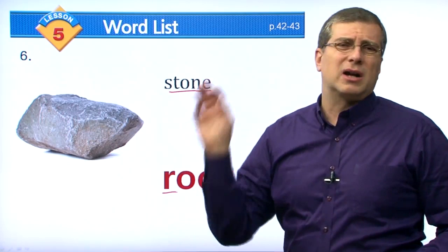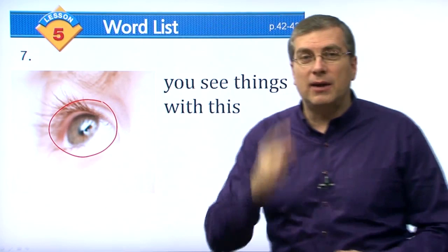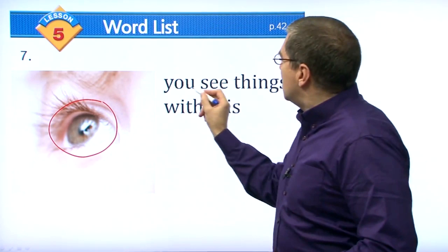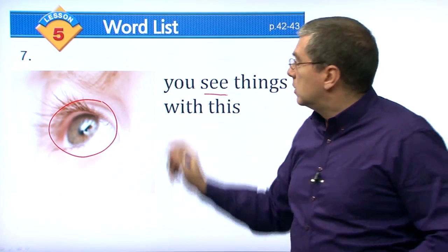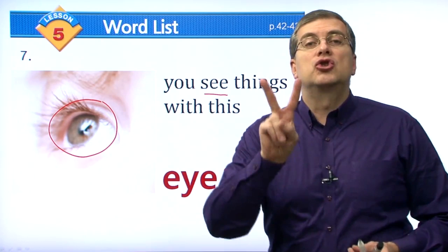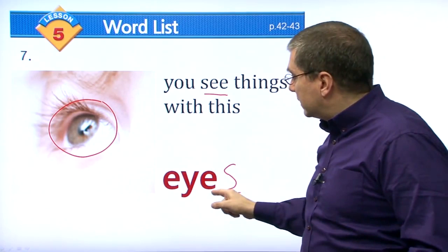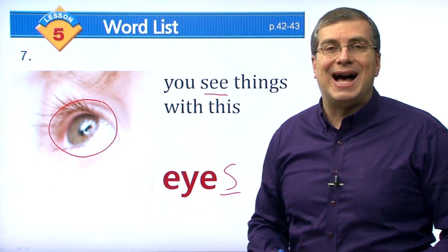Our next word: I have two of them behind my glasses. You see things with this — it is an eye. Of course we have two, so we have eyes. If you want to talk about one, you say 'I can see with one eye.' Eye is singular, eyes is plural. We all have two eyes, and what do we use our eyes for? We see things — that's one of our five senses.